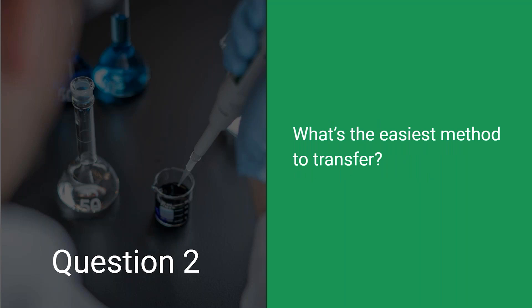Our next question is: what's the easiest method to transfer? I would say that the easiest method to transfer would be a well-vetted, well-developed method. Give yourself time to make sure that robustness has been evaluated on multiple days and weeks, using multiple analysts, to make sure that it is repeatable within a single lab before you try to send it off to a receiving lab.